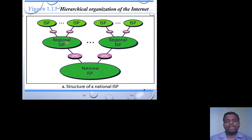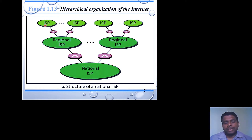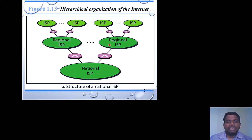The Regional ISP is responsible for providing internet services within a specific region. For example, if we are accessing the internet from Kavali, we are using our local internet service provider. Multiple local ISPs can be organized and managed by the Regional Internet Service Provider. Different regional ISPs across areas like Andhra Pradesh, Telangana, and Bangalore are all managed by the National ISP.